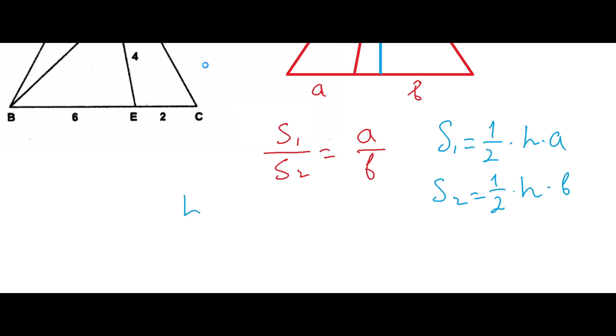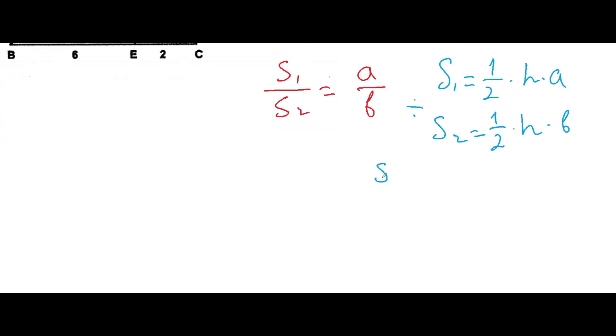H, or we can say that if we will divide it, we can get S1 over S2 will be equal to one-half times H times A over one-half times H times B. Here we can cancel H and one-half and one-half. We can get A over B. We proved this.